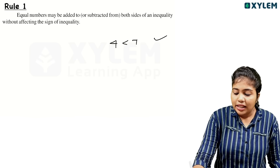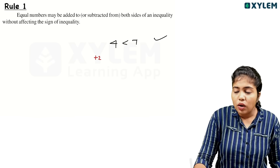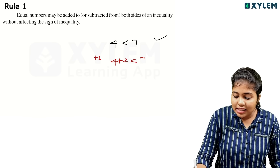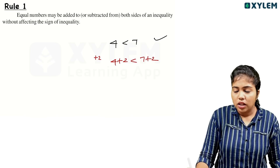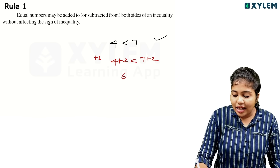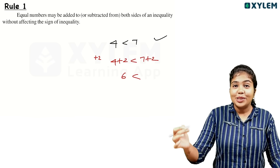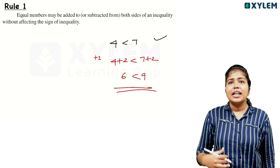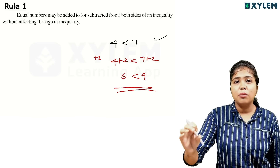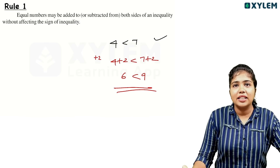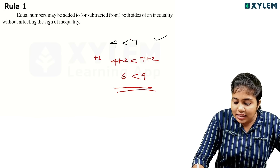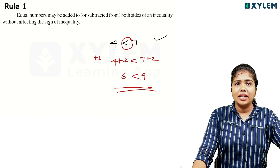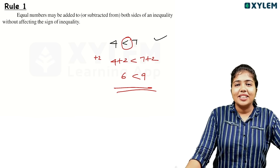If you have 2, you can add 2 to the right side. So 4 plus 2 is equal to 7 plus 2. 4 plus 2 is equal to 6. 7 plus 2 is equal to 9. 6 is less than 9. If we add the same number to the left and right of an inequality, we can keep the inequality sign — we can add the same value to both sides.